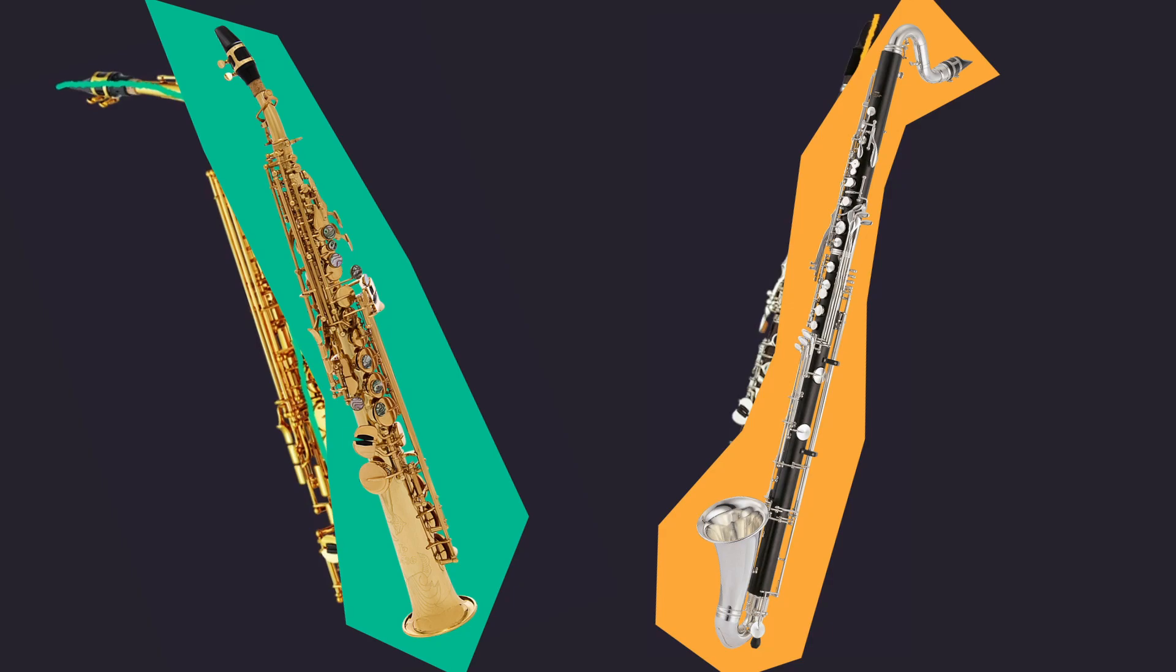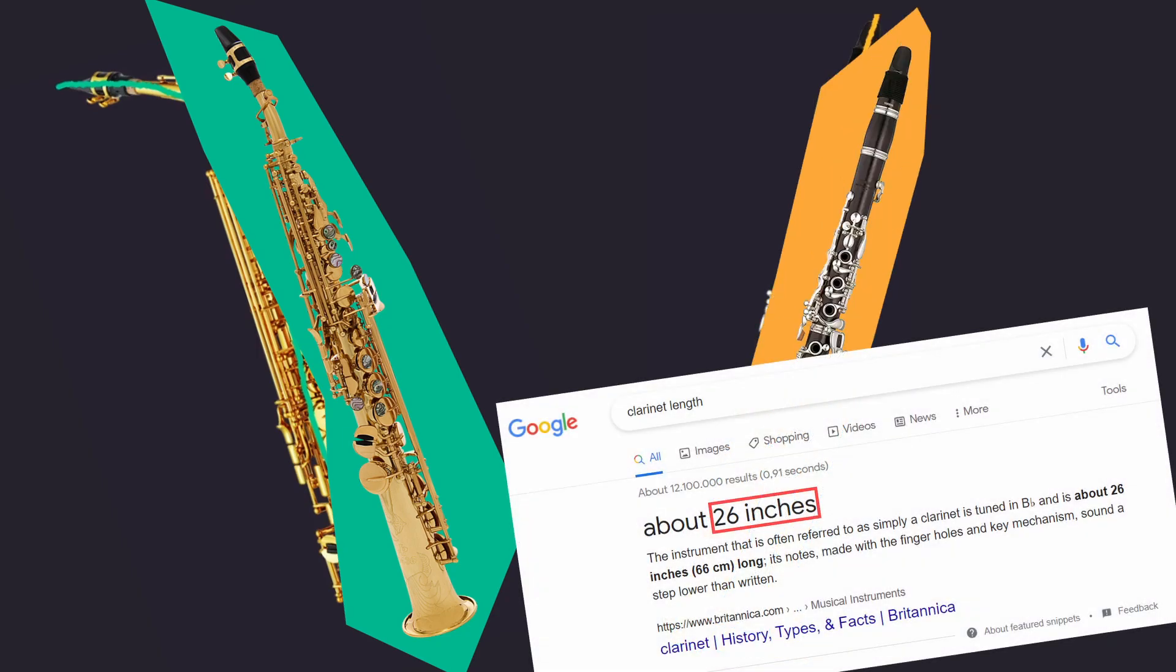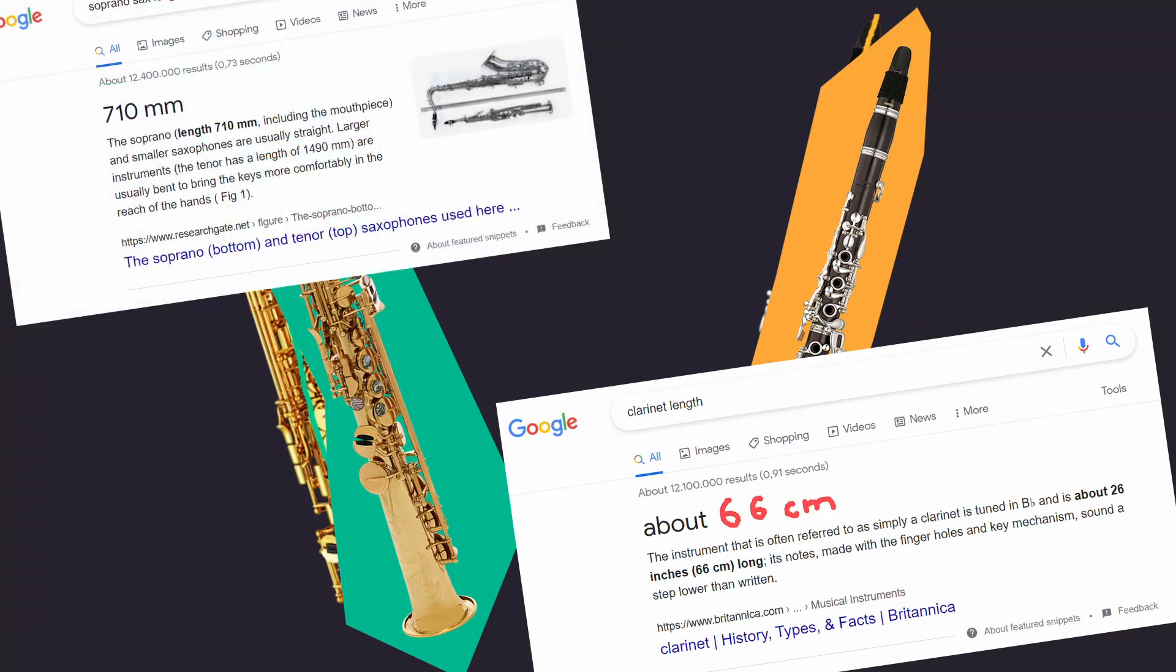But there is a more fundamental difference. Let's look up the length of the straight saxophone and the clarinet. The clarinet has a length of 66 centimeters. The straight saxophone has a length of 71 centimeters.